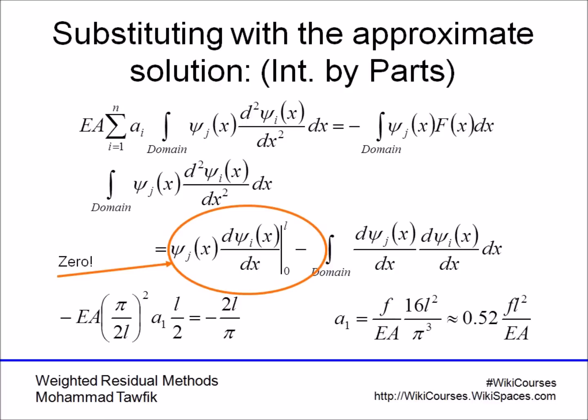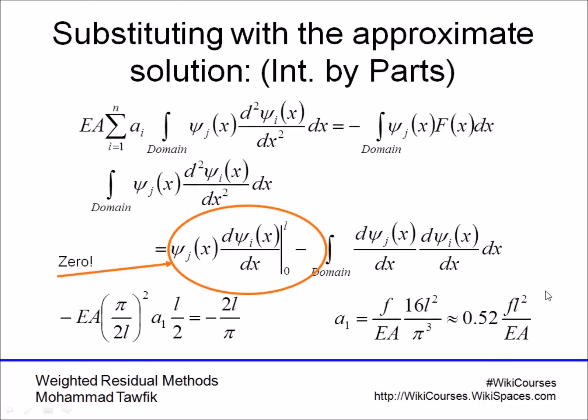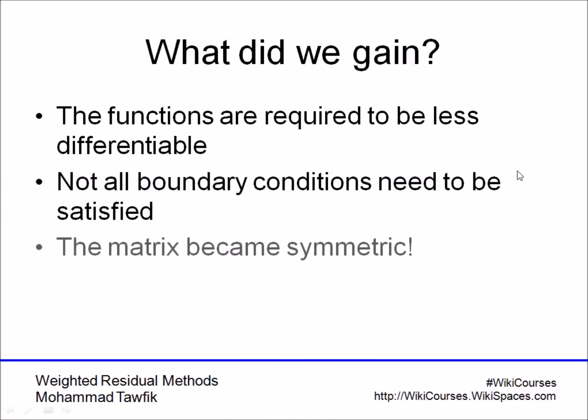But if we get the same solution, why did we go through all that integration by parts? Well, integration by parts reduced the differentiation on the function that you proposed, the approximate function that you have. Now, all what appears in our equations is the first derivative. So if ψ_j is not two times differentiable, but only one time differentiable, it still works. It reduces the admissibility conditions. And it produces actually a very nice other outcome, which is the matrices are symmetric. Symmetric matrices are much easier to handle. They have some special properties that make them easier to solve.